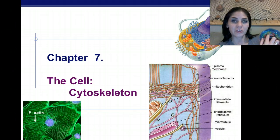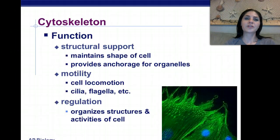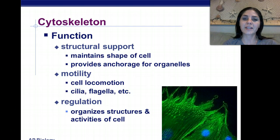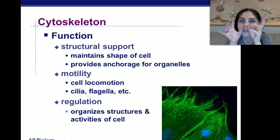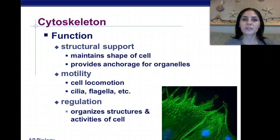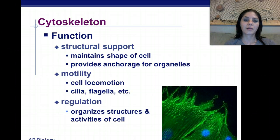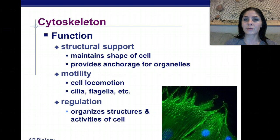So these are the centrioles of the cell right here, and in here we have some of the intermediate fibers. The function of the cytoskeleton is for structural support and for motility. It helps to maintain the shape of the cell, and it provides anchorage for cell organelles so they don't just flop all over the place. It provides locomotion for the cell in the form of cilia, which are those little finger-like, hair-like projections on cells that kind of move them around. And flagella, which are those long, whip-like tails on cells such as sperm. They also serve for the function of regulation — they organize structures and activities within the cell.